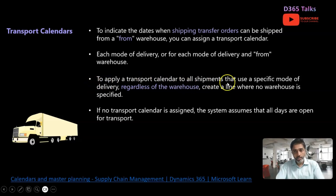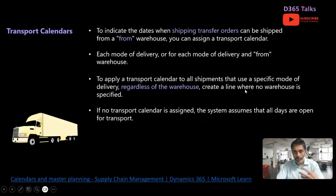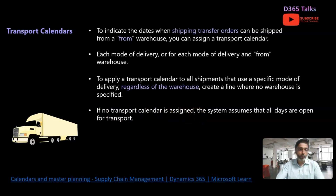To apply a transport calendar to all shipments using a specific mode of delivery regardless of the warehouse, if you do not want to consider the warehouse and always want to provide a default transport calendar, create a line with no warehouse specified — if the warehouse is not provided it means any warehouse by default uses the same transportation calendar. If no transport calendar is assigned, the system assumes that all days are open.